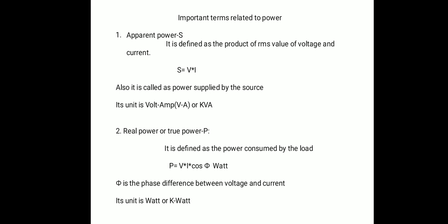Now we look at important terms related to power. Power is the rate of doing work — electrical power is the rate of transfer of electrical energy through the circuit. There are basically three types of power: the first is apparent power, the second is real power, and the third is reactive power. Apparent power is defined as the product of the RMS value of voltage and the RMS value of current, and it is also called the power supplied by the source.